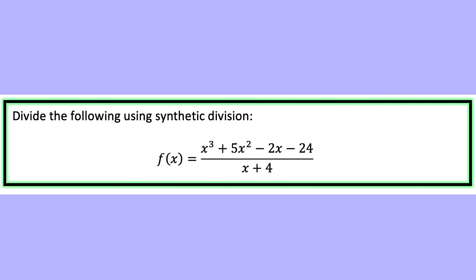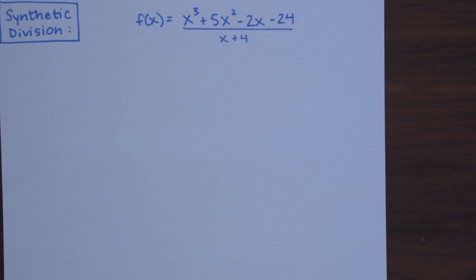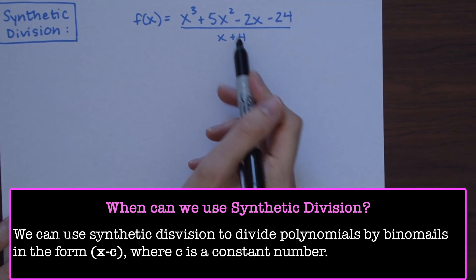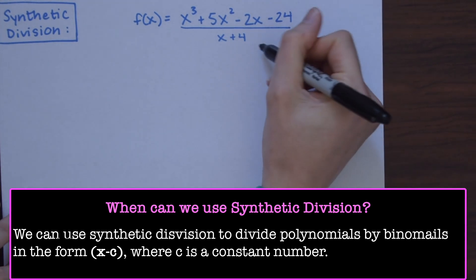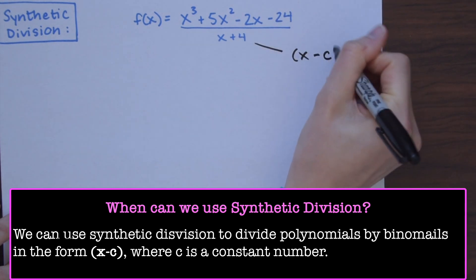So let's look at an example. Divide the following polynomial x³ + 5x² − 2x − 24 divided by x + 4. Notice right away that we can use synthetic division here because we're dividing by x + 4, which is a binomial in the form x minus c.